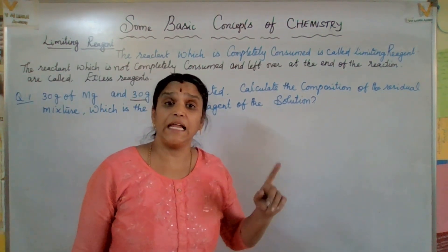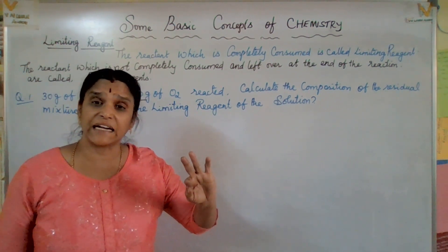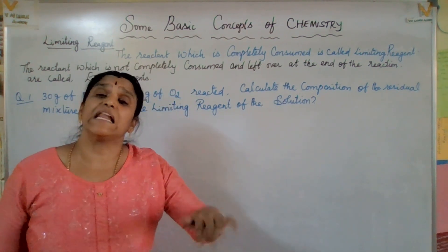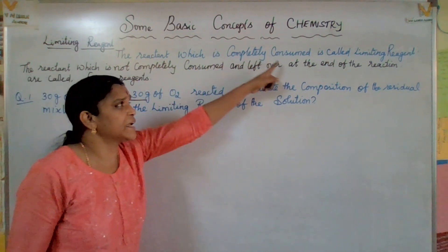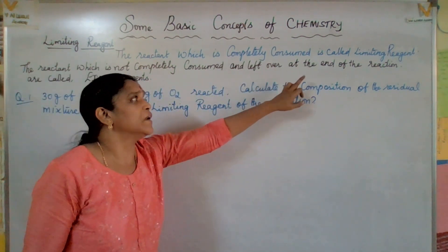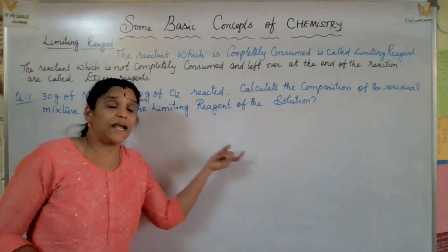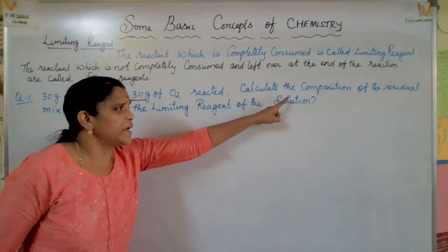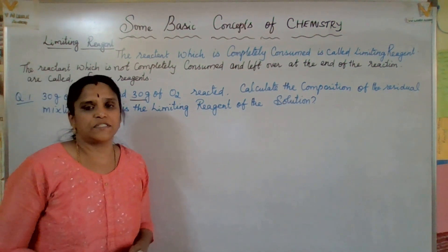Now let us identify the limiting reagent. The limiting reagent is the reactant which is completely consumed during the reaction. The reactant which is left over at the end is called the excess reagent. Problem: 30 grams of magnesium and 30 grams of oxygen reacted. Calculate the composition of the residual mixture and identify the limiting reagent.